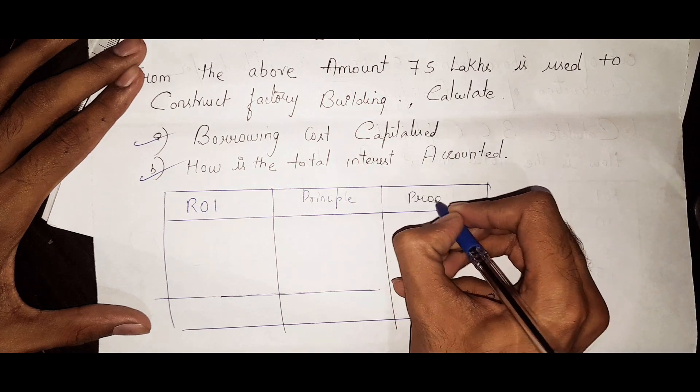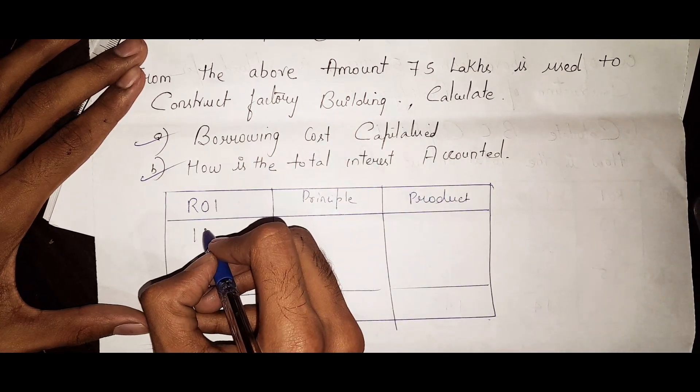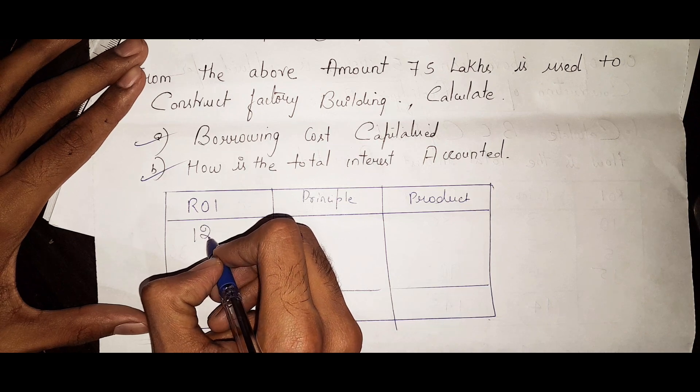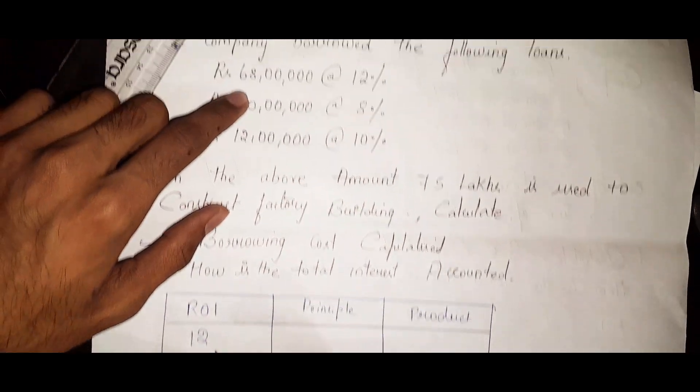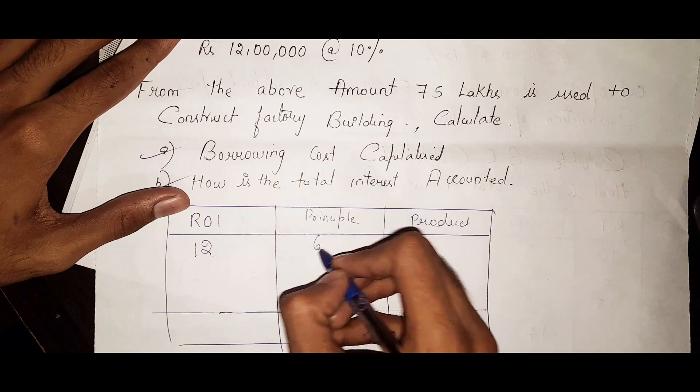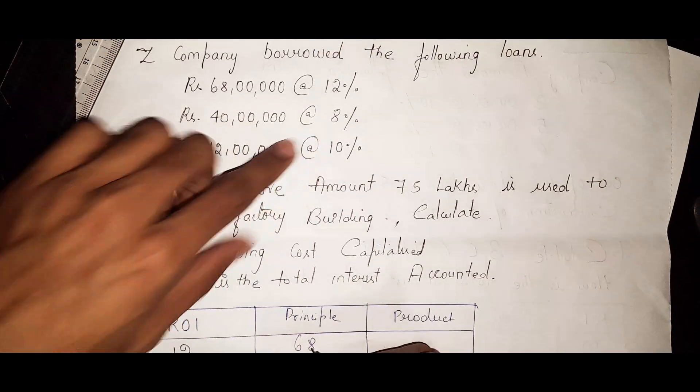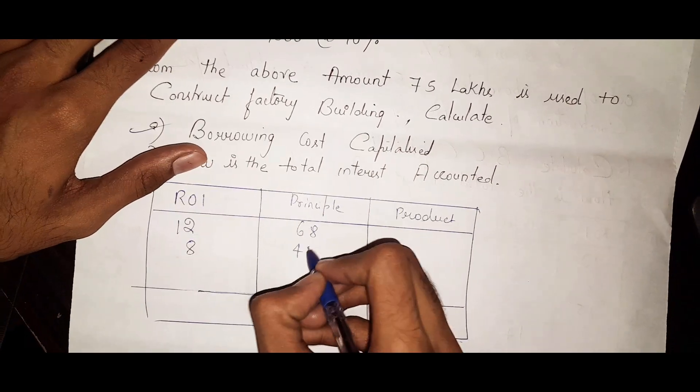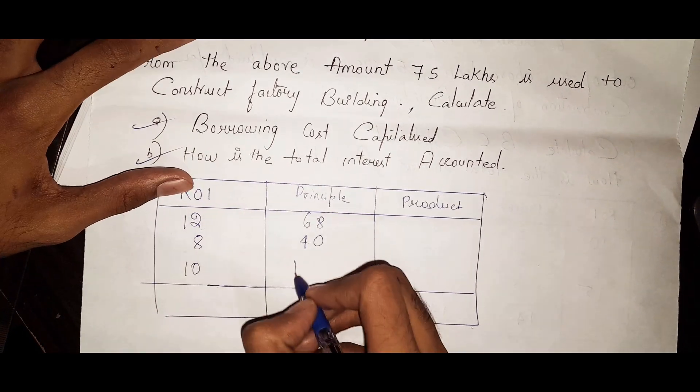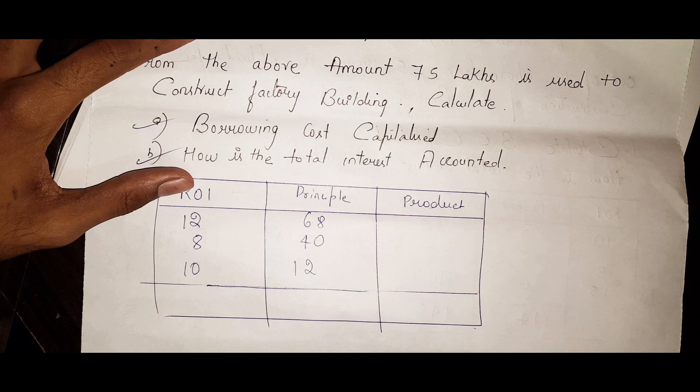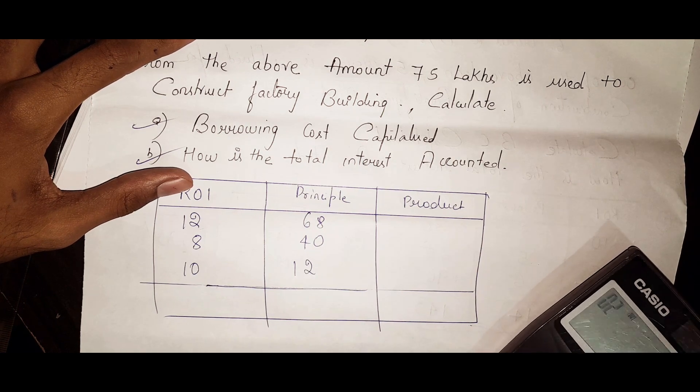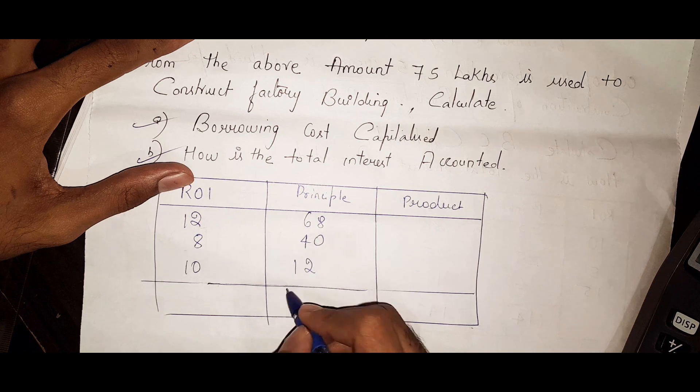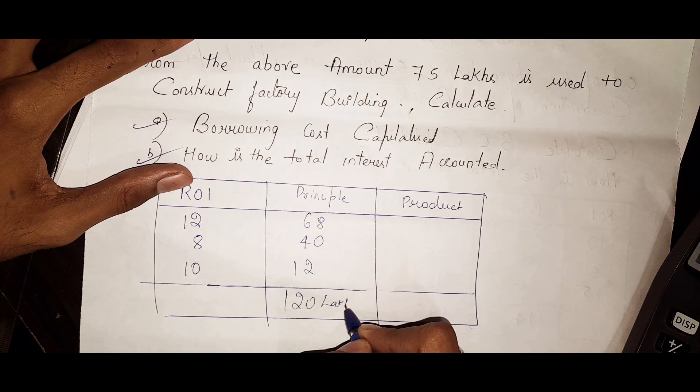Rate of interest is 12 percent and they have taken 68 lakhs. Here it is 8 percent and 40 lakhs. Third one is 10 percent and 12 lakhs. Now add these: 68 plus 40 plus 12, so total 120 lakhs they have taken.